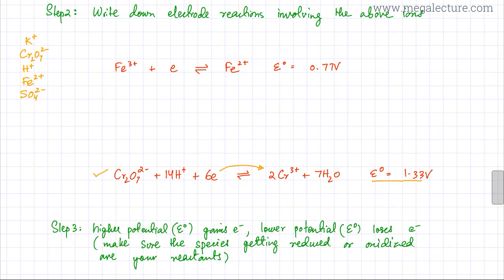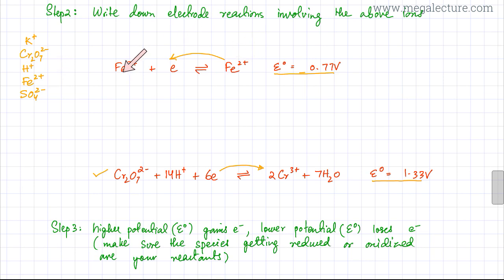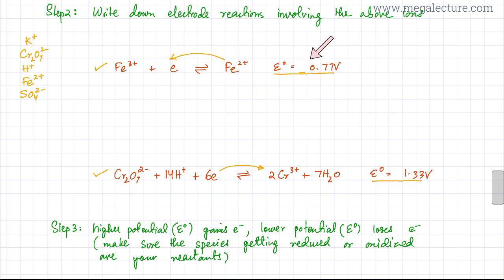Finally, we are left with just two equations, and the least potential is 0.77 volts. This would be the one losing electrons — going in the backward direction. It would be Fe2+ losing electrons to form Fe3+. Do we have Fe2+ in our reactants? Yes, we do. So Fe2+ is selected as the species getting oxidized to Fe3+. We've now selected our two electrode reactions.